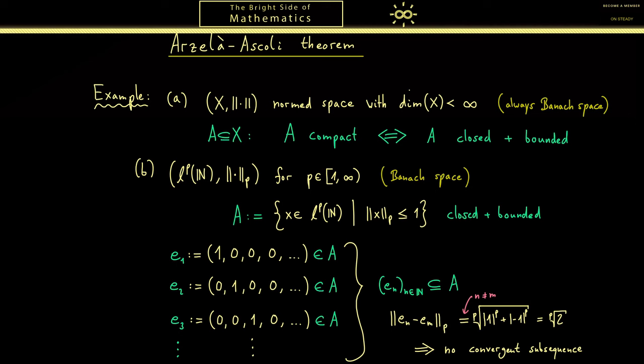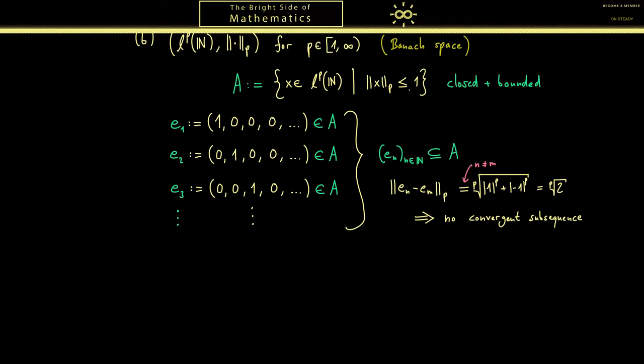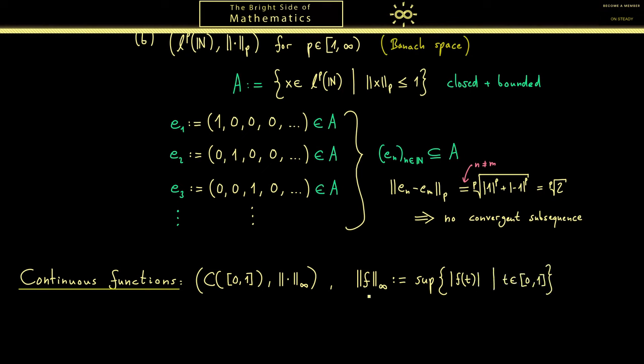This then tells us for an infinite dimensional Banach space being closed and bounded is never enough for being compact. The Arzelà-Ascoli theorem now tells us which information we have to add for the Banach space given by the continuous functions. So let's look at the continuous functions defined on the unit interval together with the supremum norm. Which is of course defined as the supremum over all possible outcomes measured in the absolute value. Please don't forget the function has values in our number field F.